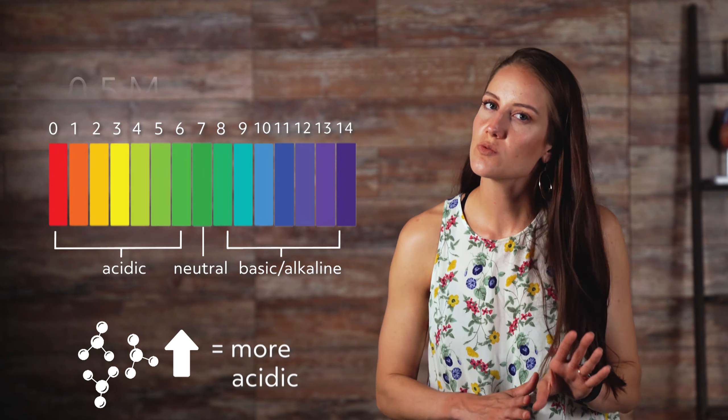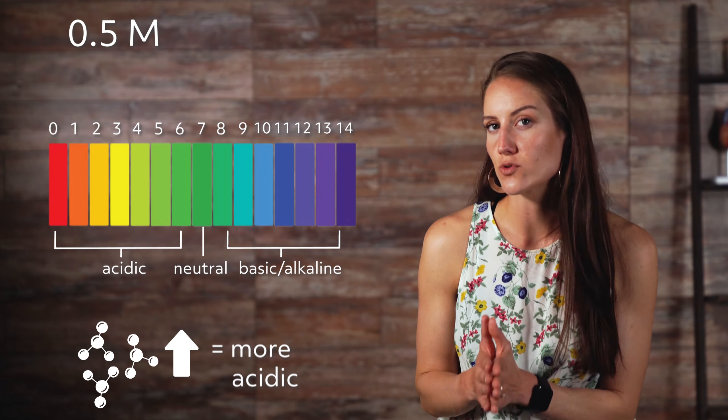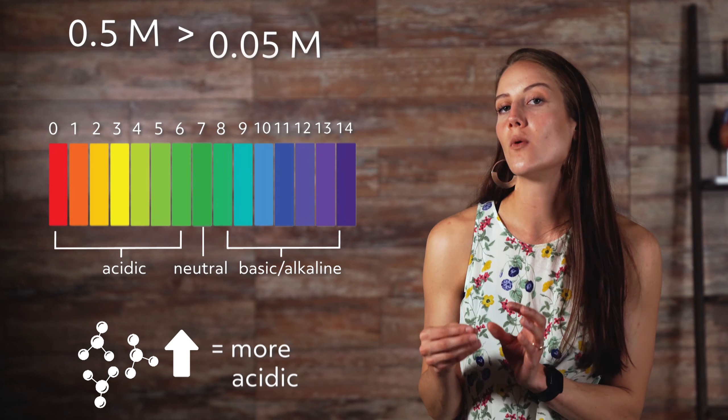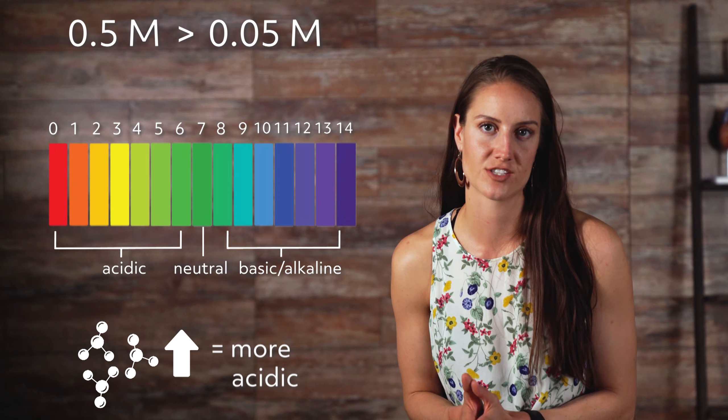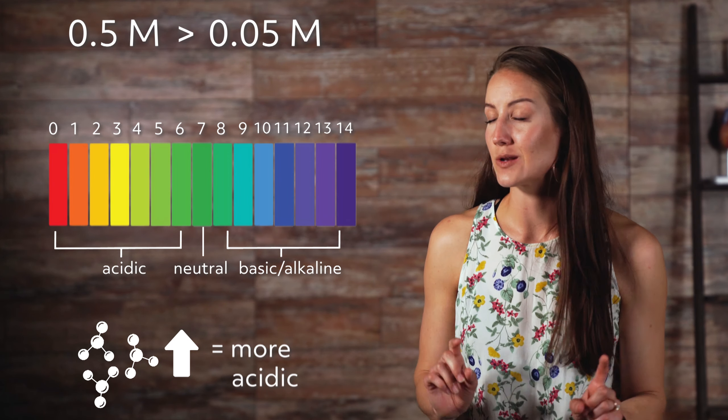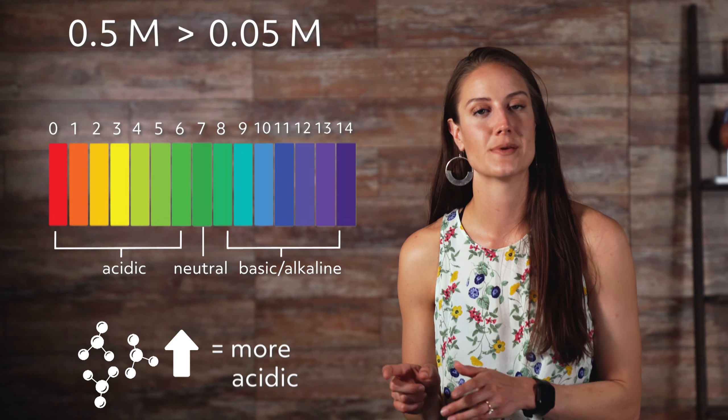For instance, a solution with a 0.5 mol concentration of hydronium ions is more acidic than a solution with a 0.05 mol concentration of hydronium ions. Let's look at a few common substances and where they fall on the pH scale.